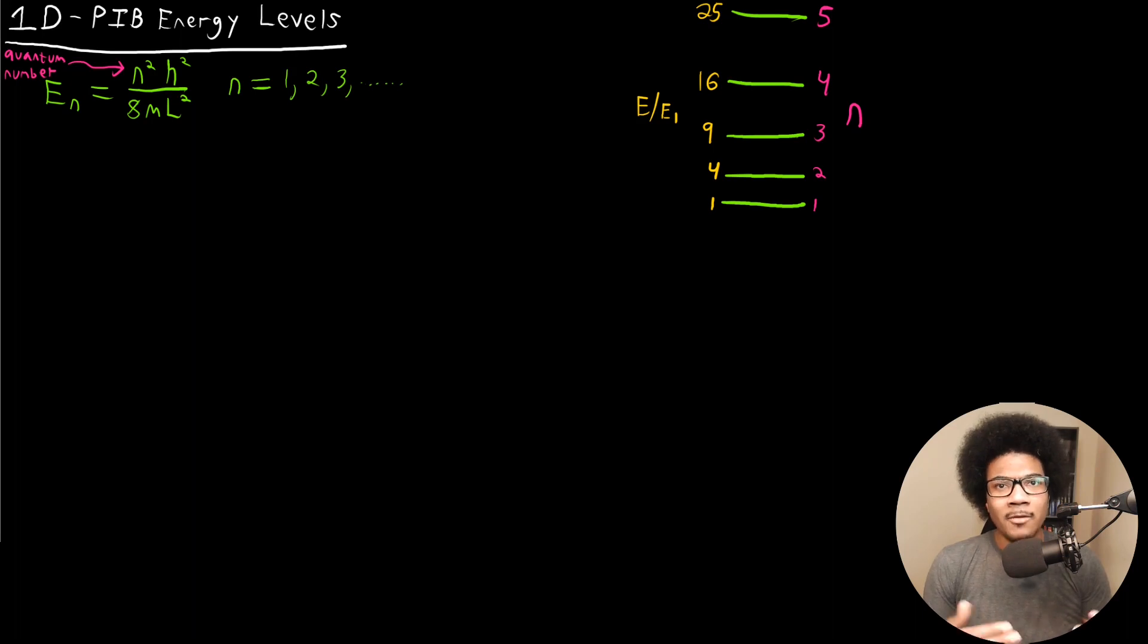In classical mechanics, of course, a particle can have a zero energy. If something's not moving and it has no potential acting on it, then of course it has a zero energy. But in quantum mechanics, this is different. The particle has to have some base level energy, and that energy is called what we call the zero point energy.